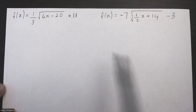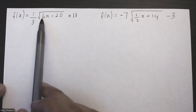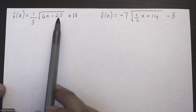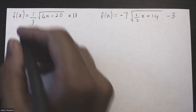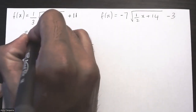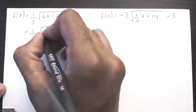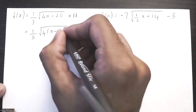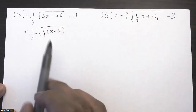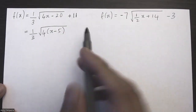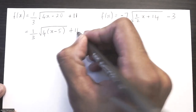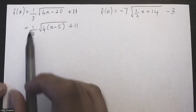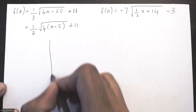We want to sketch out these functions and look at the transformations. We have a k value and a d value, so we have to factor out this 4 — the k value and d value have to be factored inside the square root. Then plus 11 stays the same.